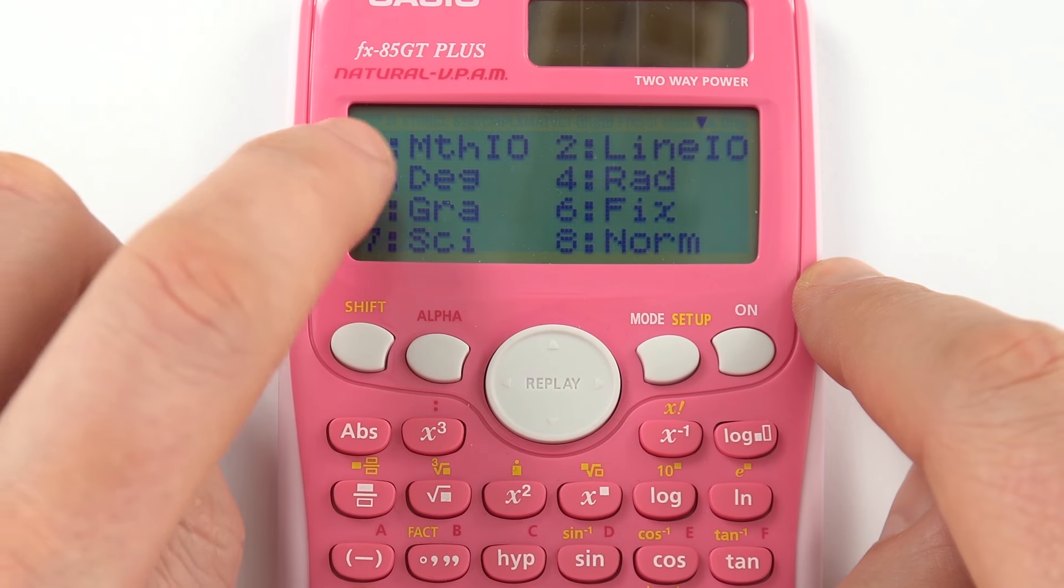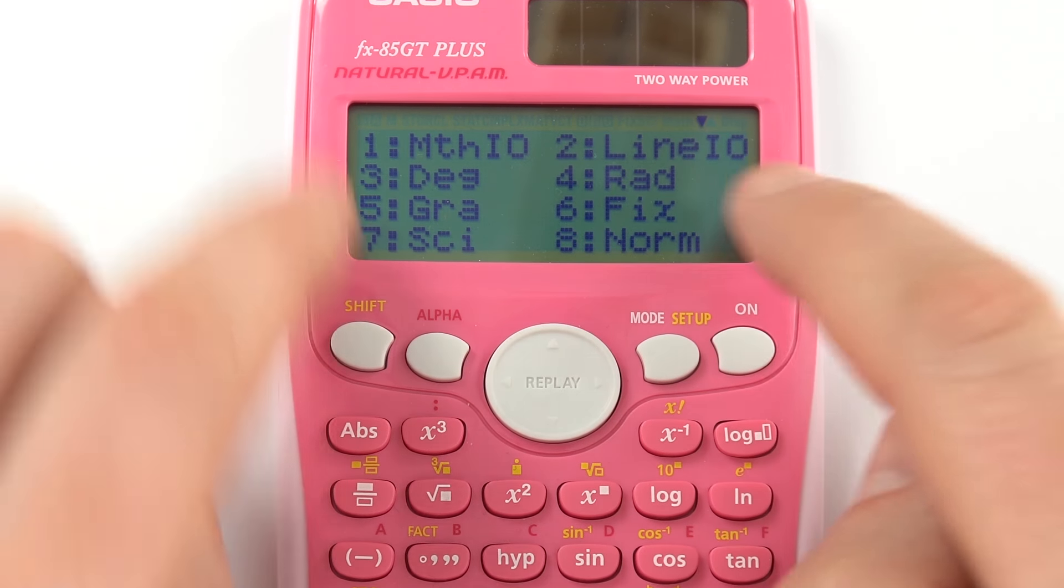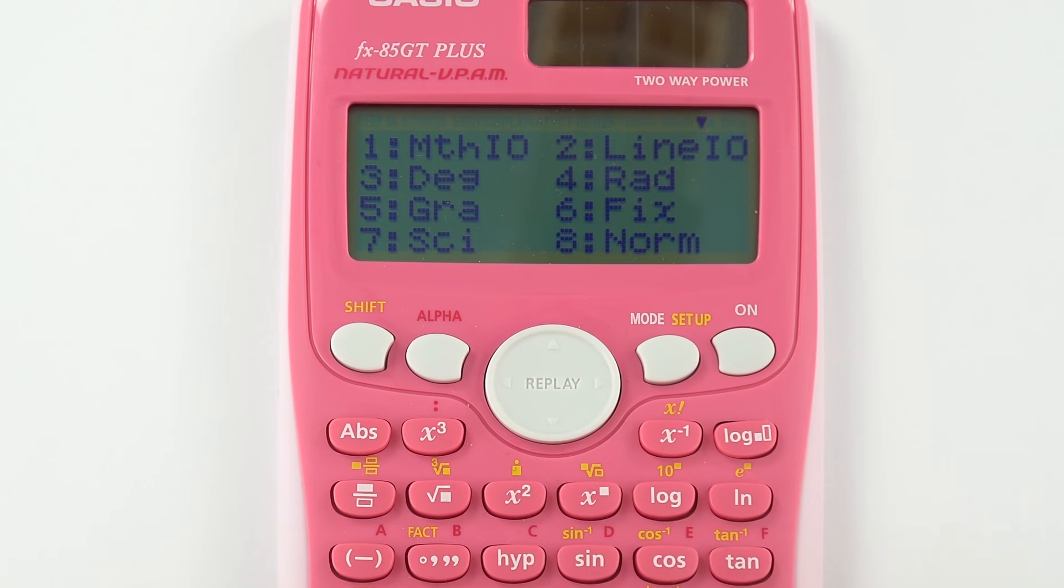Now what we want to do is change from the math mode to the linear mode. And I do this just by pressing number 2 to select line.